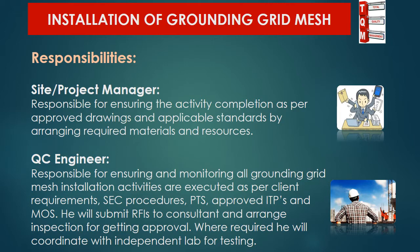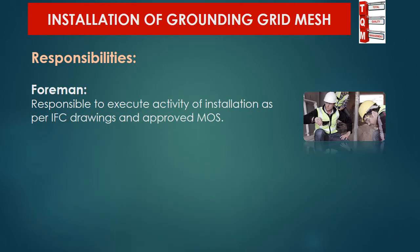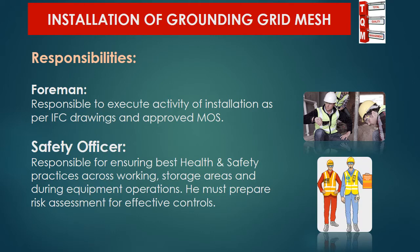The QC engineer will follow Saudi Electricity Company procedures, PTS, and approved IDPs. He will submit RFIs to consultants and arrange their inspections in order to get work approval, and where required, will coordinate with an independent lab for testing. The foreman will be responsible to execute the installation activity as per IFC drawings and approved method statement, and will be the key contact with the site manager or engineer for materials and resources.